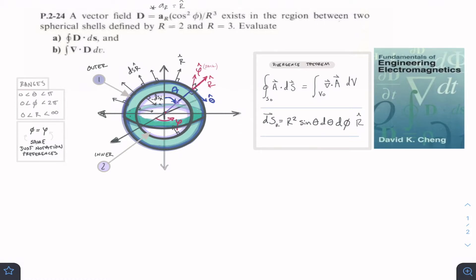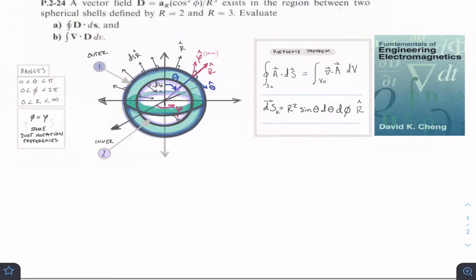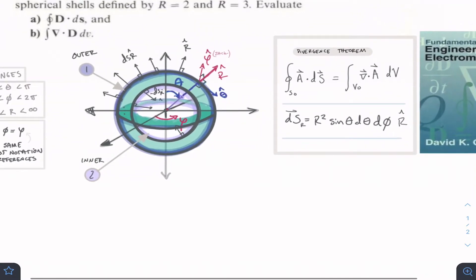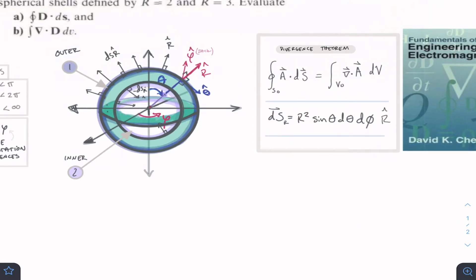Starting with part A: when we model our dS vectors — our differential surface vectors — we need a vector direction normal to the surface, coming out perpendicular to the surface. This is the general dS vector for the r-hat direction for a sphere. Because our volume is between the two shells, we'll have flux leaving through the external surface and flux leaving through the internal surface. The differential surface for the external sphere is modeled with a positive r-hat, and for the inner sphere with a negative r-hat.